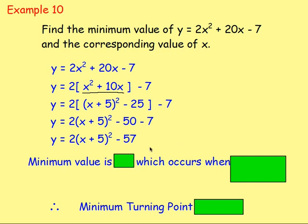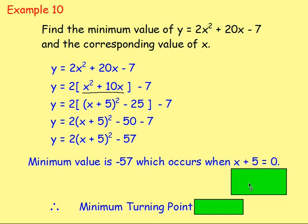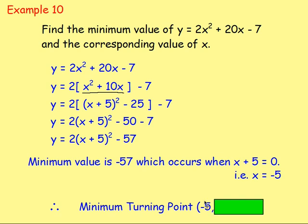So the minimum value: when you square something it's zero, times that by two it's still zero, take away 57 — the minimum value is negative 57. And this occurs when the thing I'm squaring equals zero. Here I'm squaring x plus five, so x plus five equals zero, meaning x equals negative five. The minimum turning point is (−5, −57).